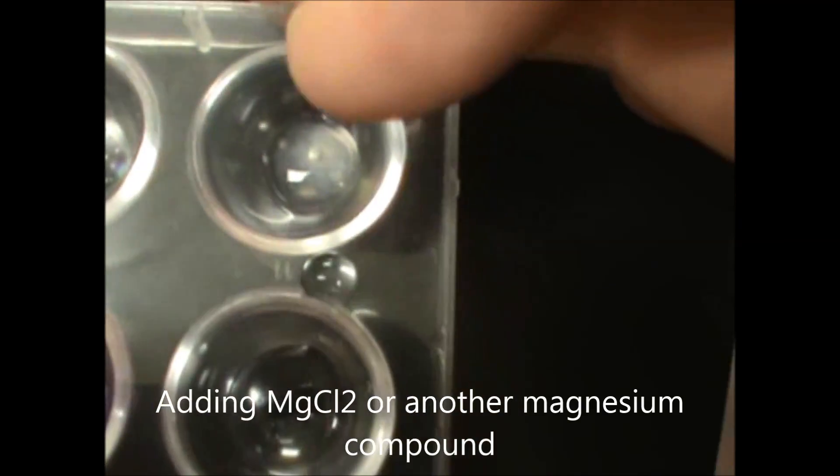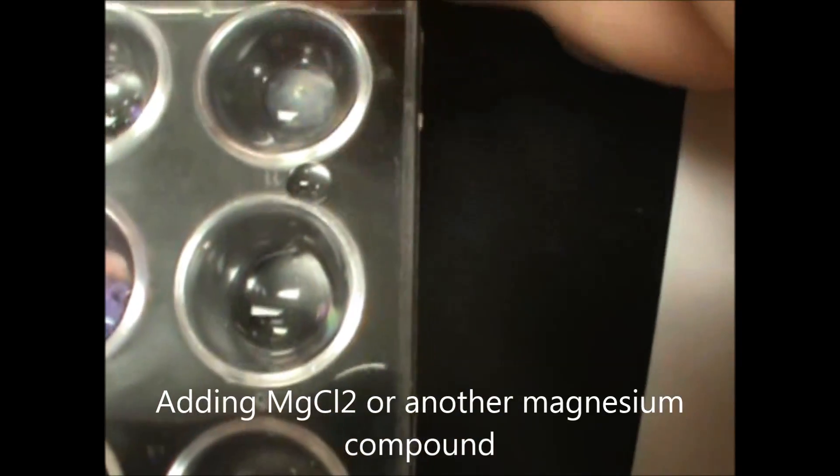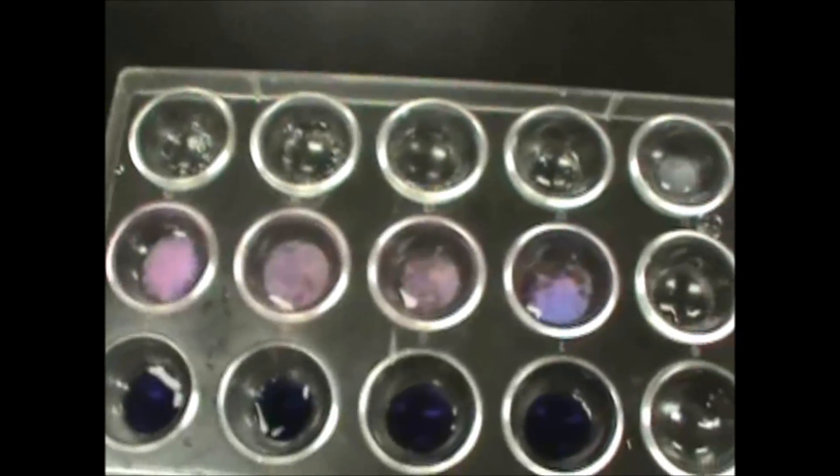So you can see that I have a precipitate here, but not here, and that allows me to tell this is a carbonate and this is a bicarbonate. Thank you so much.